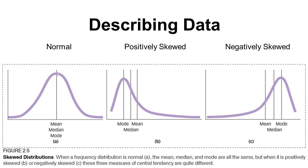If we start with a normal distribution and add one really high score, the curve changes so that the tail points towards those outliers — it becomes positively skewed because we have extra very high or positive scores.